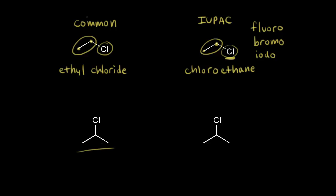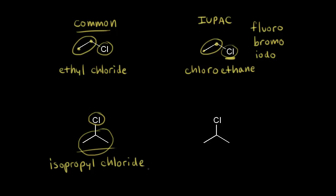Let's name this compound using our common system. Think about the alkyl group that is present. As we saw in earlier videos, this alkyl group is isopropyl. We have chlorine attached to that, so it would be isopropyl chloride using the common system. If I'm naming this using the IUPAC system, I look for my longest carbon chain — that would be one, two, and three — so that is propane. We have a chlorine attached to carbon two, so that would be 2-chloropropane.